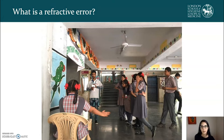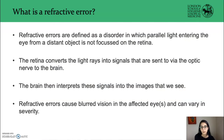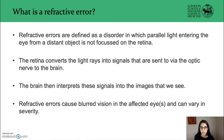I want you to pause for a minute and define what a refractive error is. It is common to have different ways to define a refractive error, such as based on vision, anatomical or physiological condition, the type of correction required, the symptoms someone has, or the type of refractive error. None of these are incorrect and they are used dependent on context. We will define refractive errors as a disorder in which parallel light entering the eye from a distant object is not focused on the retina. The retina converts light rays into signals sent to the brain via the optic nerve, and the brain then interprets these signals into the images that we see. Refractive errors can cause blurred vision and can vary in severity.